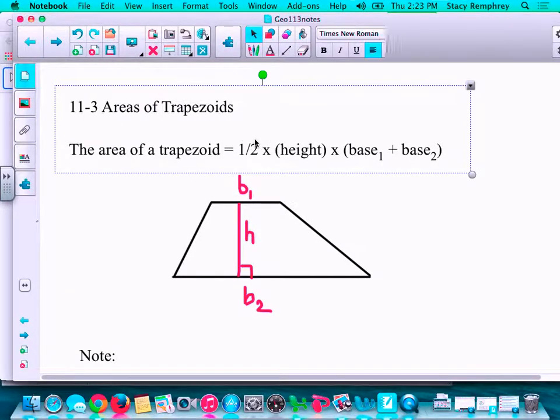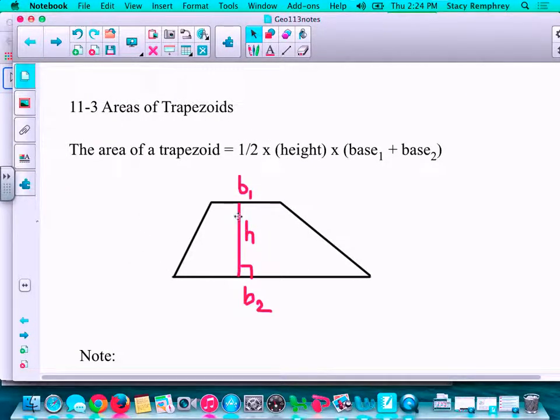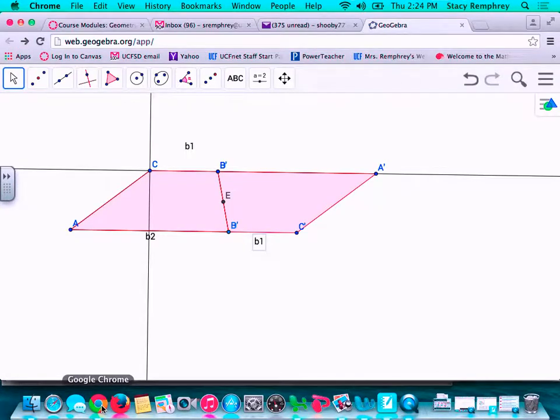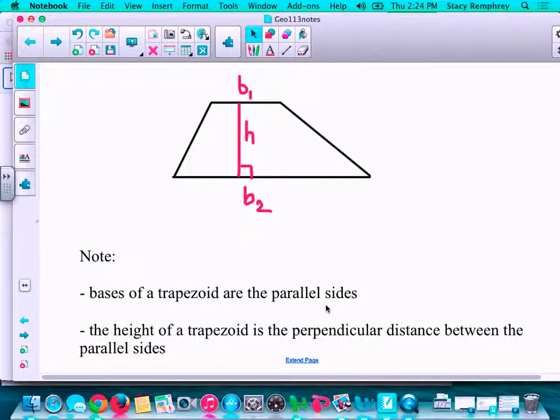So that's where our formula is going to come from for the area of a trapezoid. So the area of a trapezoid is 1 half times the height, which is here, times the sum of the bases. And you saw that in the previous picture here, again, coming from the area of a parallelogram. The parallelogram has an entire base of the sum of those bases. A few notes with that. The bases of the trapezoid are always the parallel sides, and the height of a trapezoid is the perpendicular distance between the parallel sides. So it's not necessarily one of the sides. It's the perpendicular distance between the two.